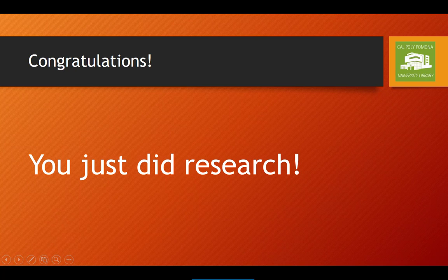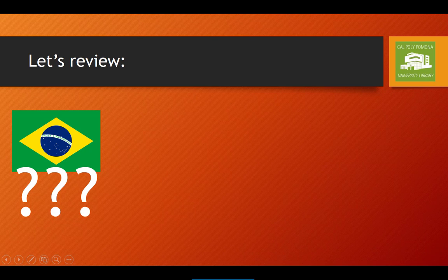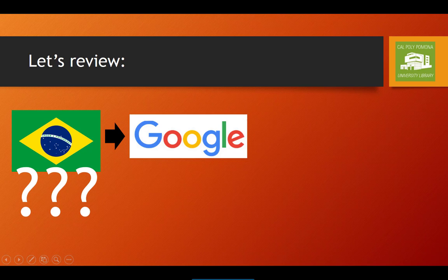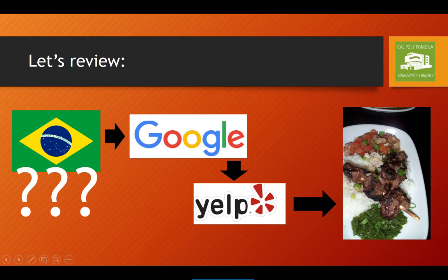Congratulations! You just did research. You had a question — you wanted to know where you could get Brazilian food you could afford that would be worth your money. You gathered evidence from sources you trusted that provided you with multiple places to eat, and then gathered more evidence that helped you decide which place to go to. Armed with your answer, you went and had dinner. You had a question, you gathered evidence, you answered your question — in a nutshell, you did research.